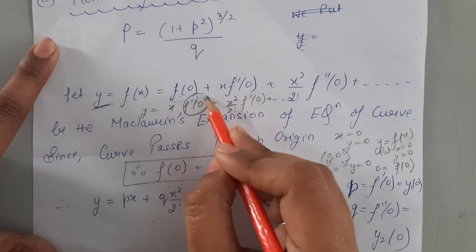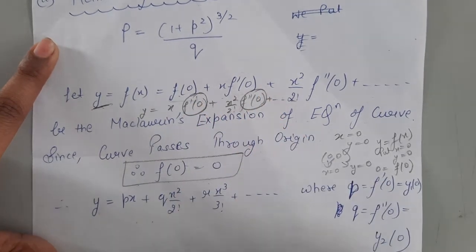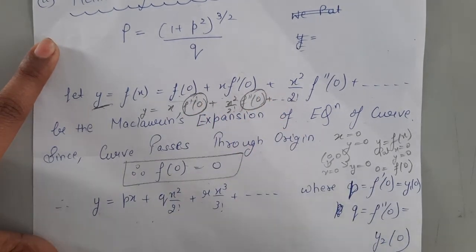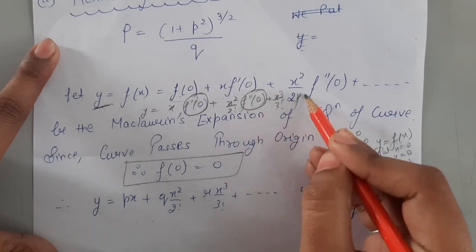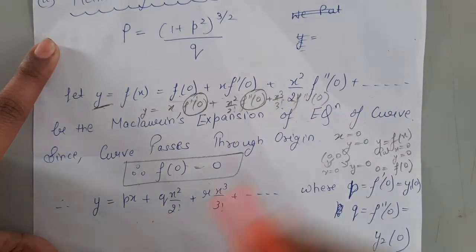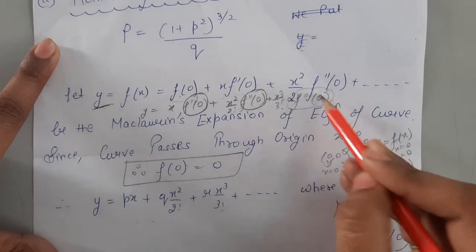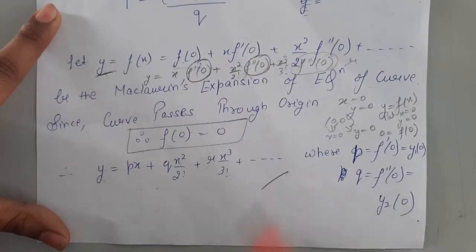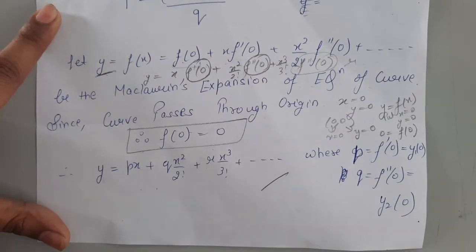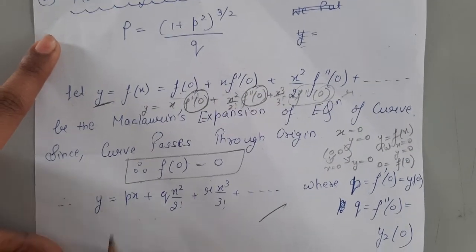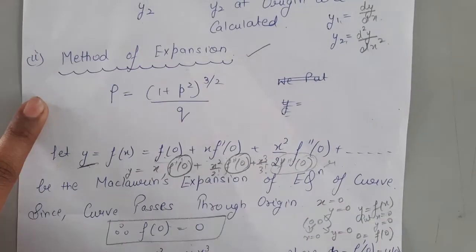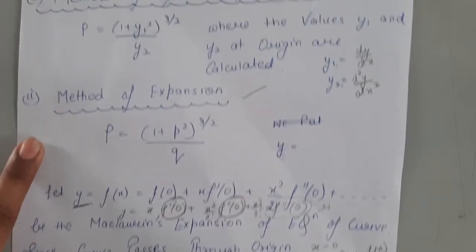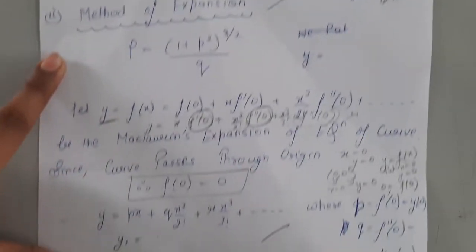We let p = f'(0), q = f''(0), and r = (x³/3!)·f'''(0) at x=0, and so on. Then we find y₁ and y₂, substitute into the radius of curvature formula, and the required radius of curvature is obtained.